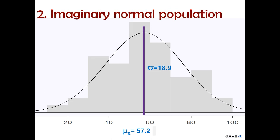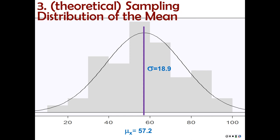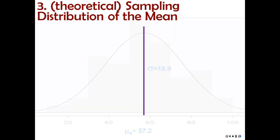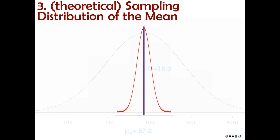We've got the imaginary distribution that our sample came from. But then we have to imagine what's the sampling distribution of the mean — we want to compare our mean to all possible means that might have been collected. That new distribution will be much skinnier, with a lot less variability than the distribution of all possible raw scores. It will have the same mean, 57.2, but the standard error will be much smaller — our original standard deviation divided by the square root of the sample size, the square root of 54. So we go down from 18.9 to 2.57.